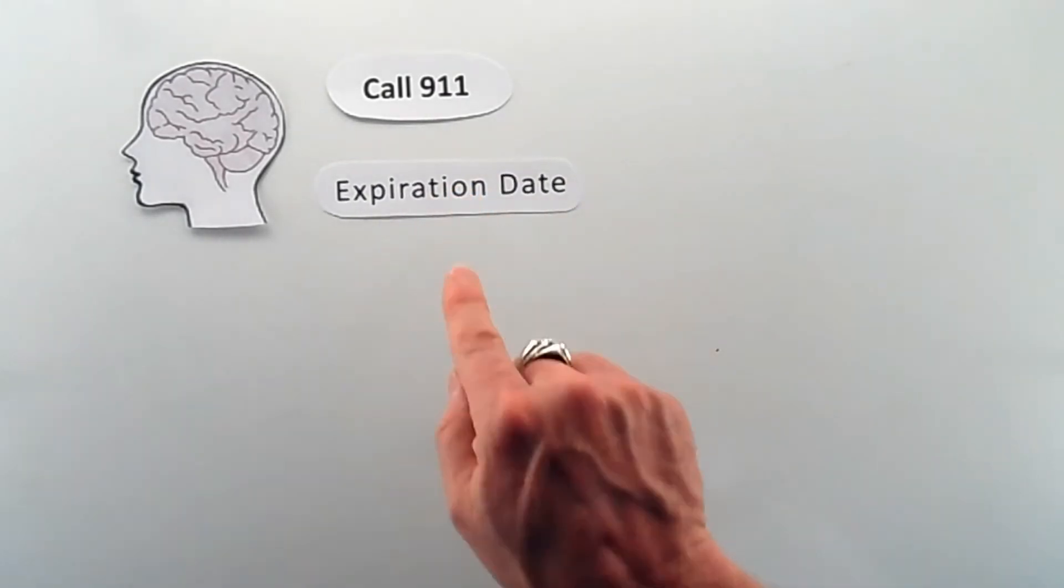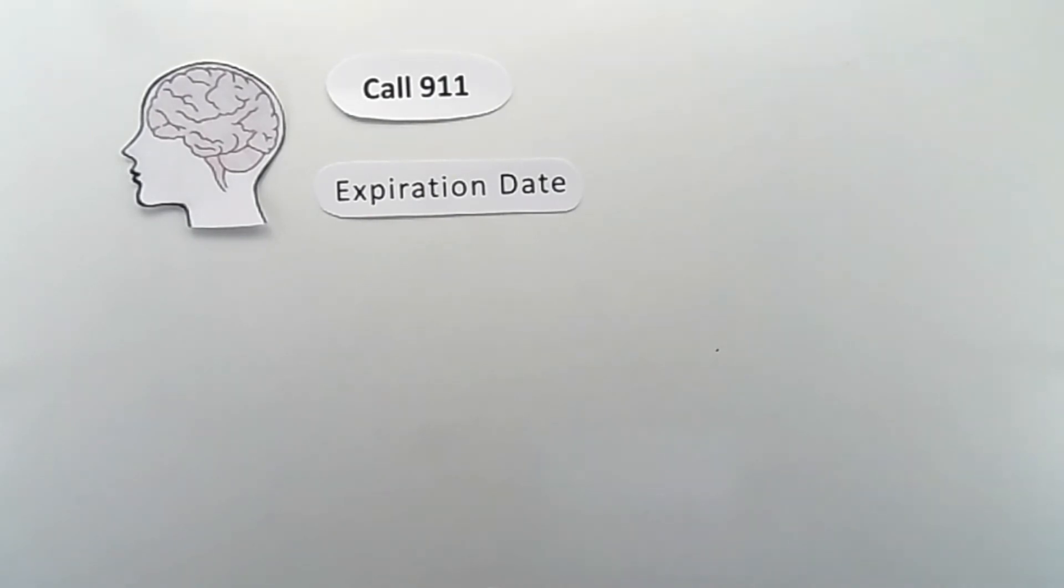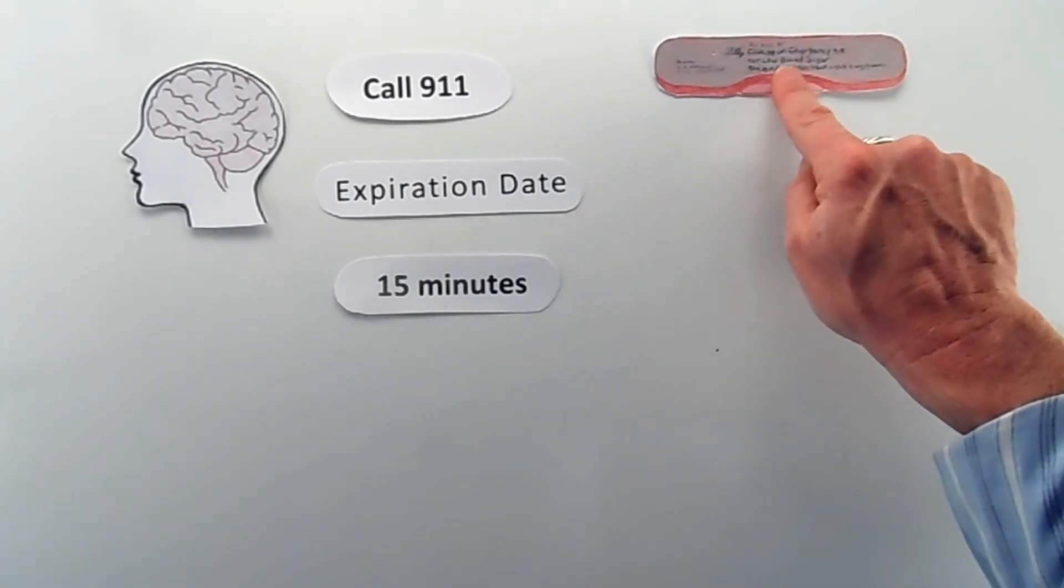Be aware of the expiration date of your glucagon. It's typically good for a year. If the patient does not awaken within 15 minutes, you may need to administer a second dose of glucagon.